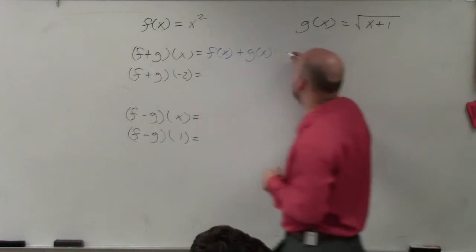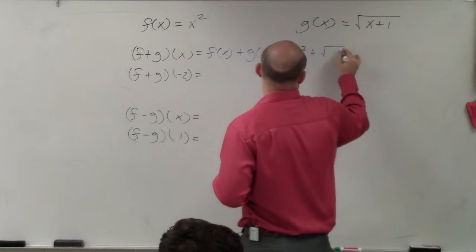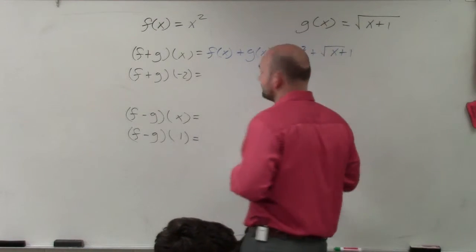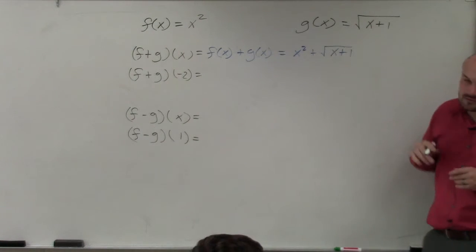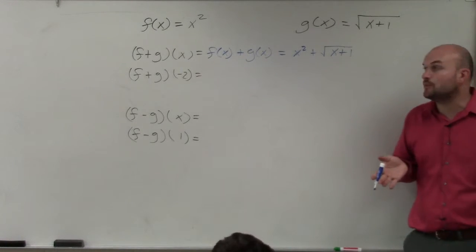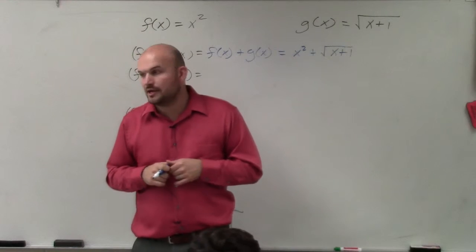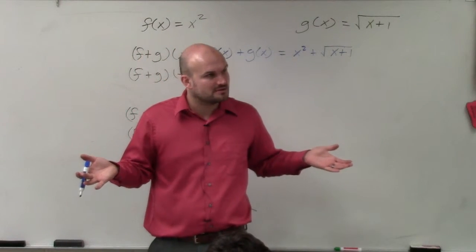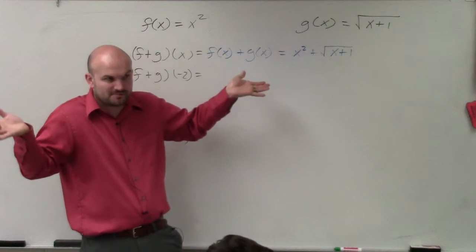You're taking your function f of x, which is x squared, and you're adding it to the square root of x plus 1. Now, you have a variable x that's being squared, and you have the square root of x plus 1. Are those like terms? No. So can you actually combine those? No, you can't. So that's really basically it. That's all we can basically do for this problem.